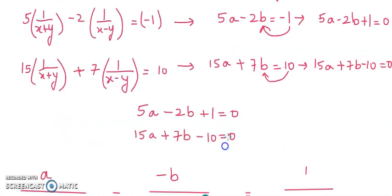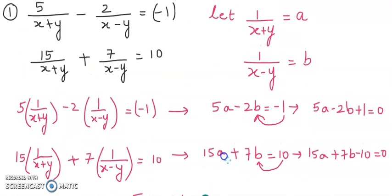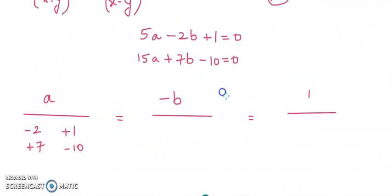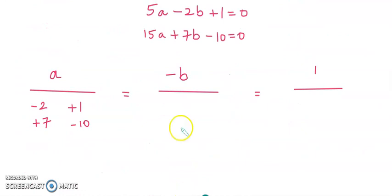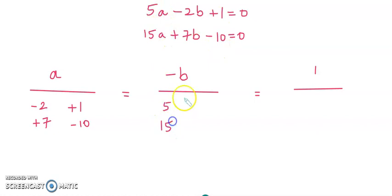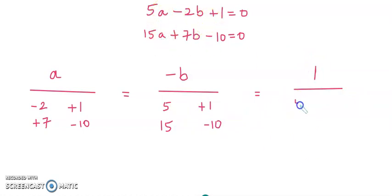Let us cross check whether we got the equation correct. Next is minus b, so I will leave the coefficients of b and take the coefficients of a and the constants. The coefficient of a is 5 and 15, and the constant is plus 1 and minus 10. For 1, I take the coefficients of a — which are 5 and 15 — and the coefficients of b — which are minus 2 and 7.